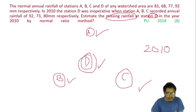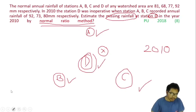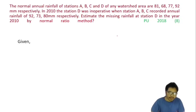Station D was inoperative, so we missed the data for station D in 2010 and need to estimate its rainfall. The question clearly states to use the normal ratio method, so we must apply that method.